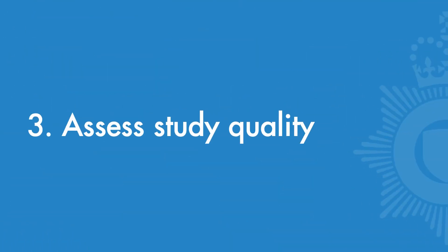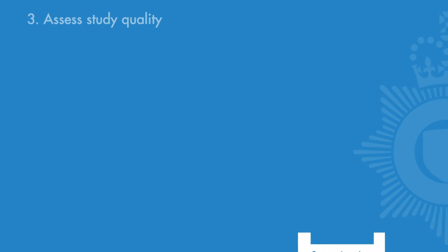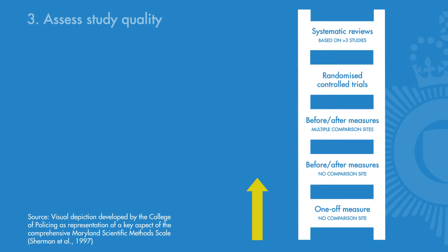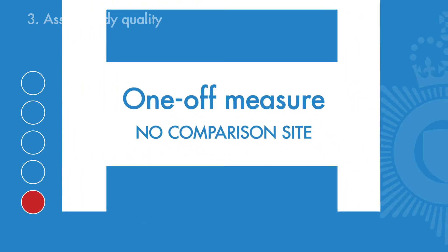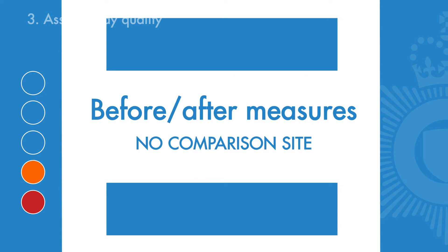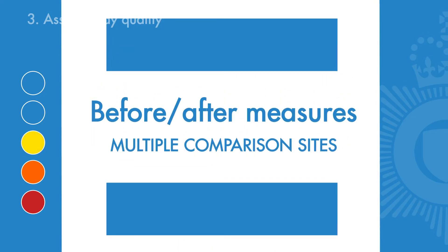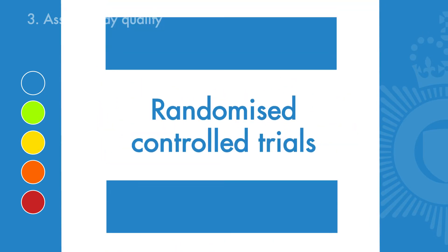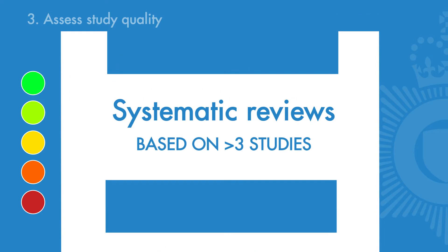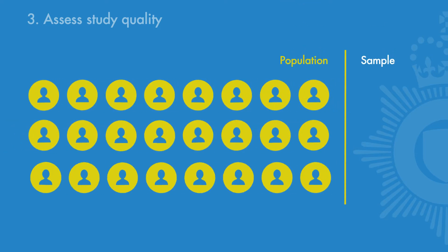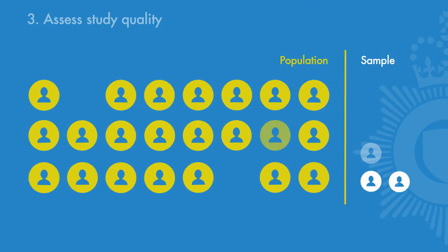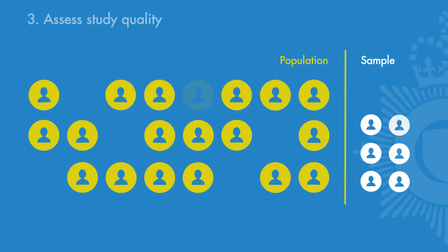The design of a study affects how confidently we can talk about its findings. The College of Policing developed an evidence ladder that describes the strengths of different designs. For example, a one-off study might only allow us to make broad statements about possible outcomes, whereas a review of five high-quality studies will allow us to make confident recommendations of what works. The number and types of people sampled affects our ability to apply findings to a larger population. Random sampling, where everybody has an equal chance of being selected, is the best technique for removing bias.